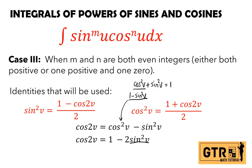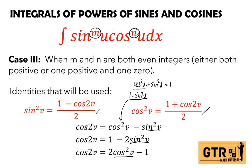Similarly, substituting the value for sine²v gives cosine 2v equals 2 cosine²v minus 1. Solving for cosine²v, we get (1 plus cosine 2v) over 2. You must memorize these two identities. We use them when the exponents are both even.